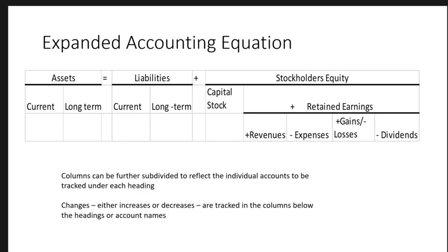What we're illustrating is that as we make changes, we need to keep this accounting equation in balance. If there's a change on the asset side, it also needs to change on the liability and stockholders' equity side. Look at all the things that could change on the liabilities and equity side: current liabilities, long-term liabilities, capital stock, revenues, expenses, gains and losses, and dividends — each one could be further broken down into more accounts. You can see that with lots of accounts, this equation could become very long across your screen.